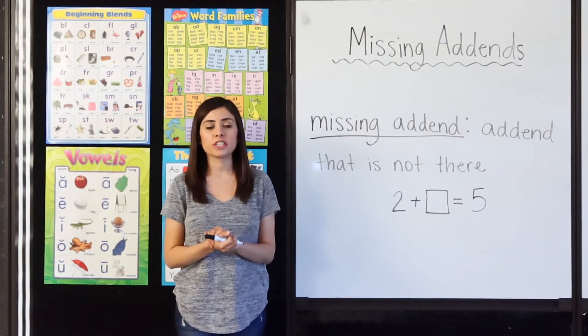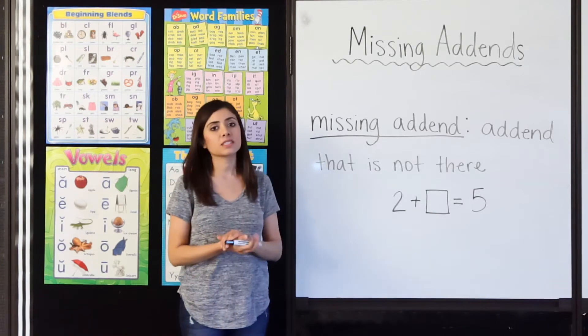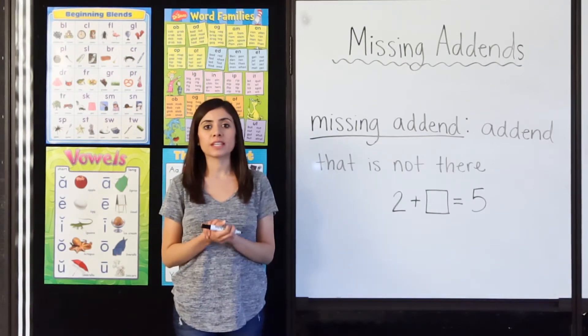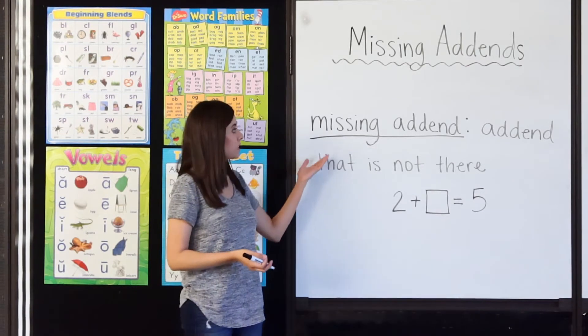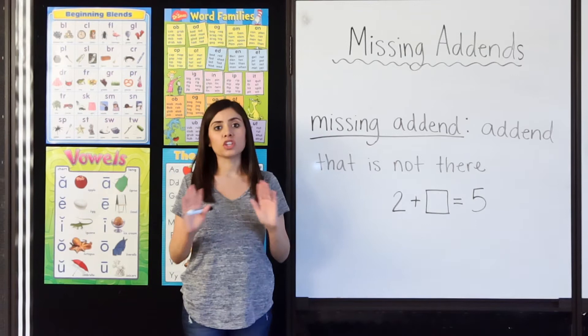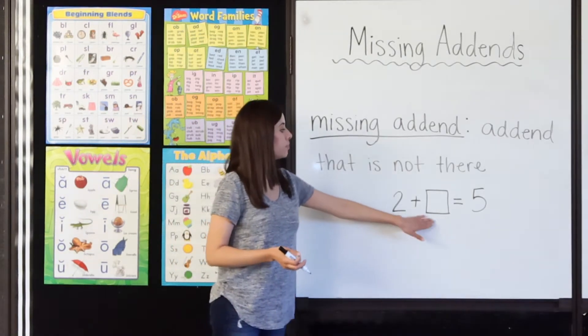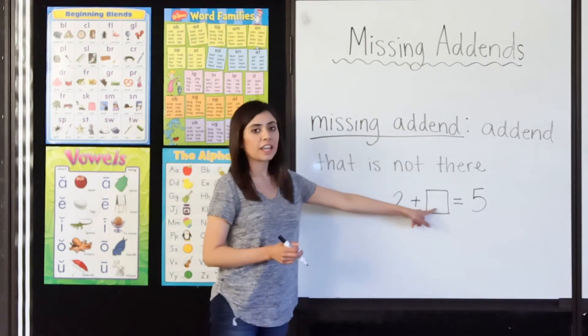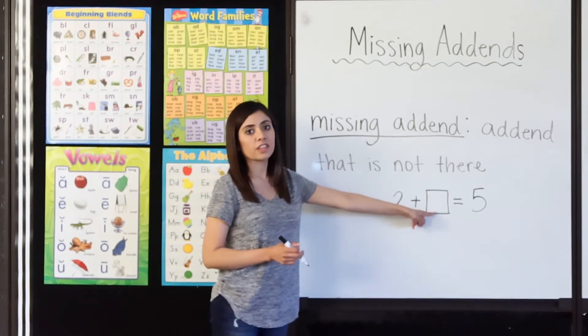Hello everybody and welcome back to another video. My name is Cynthia Ortiz and today we'll be going over missing addends. Now let's remember that an addend is a number that is being added. But what is a missing addend? A missing addend is an addend that is not there. For example, 2 plus what equals 5. As you can see, I have a missing addend. One of the numbers that is being added is not there.